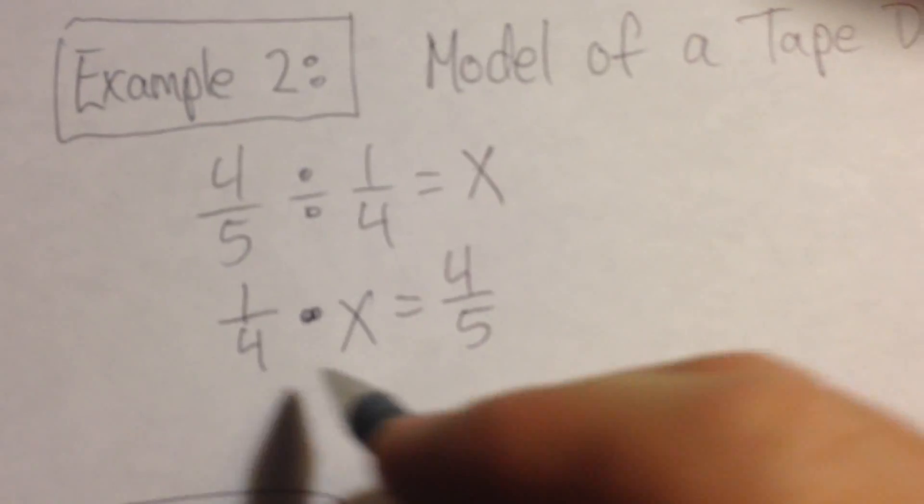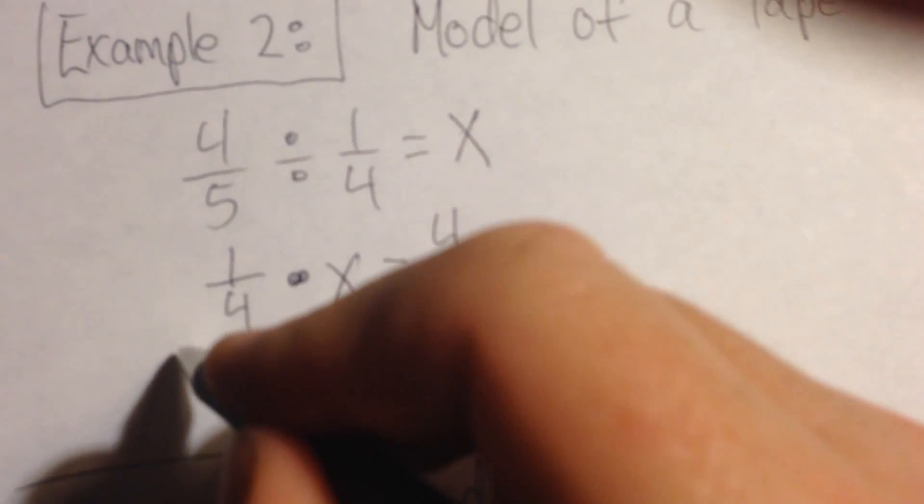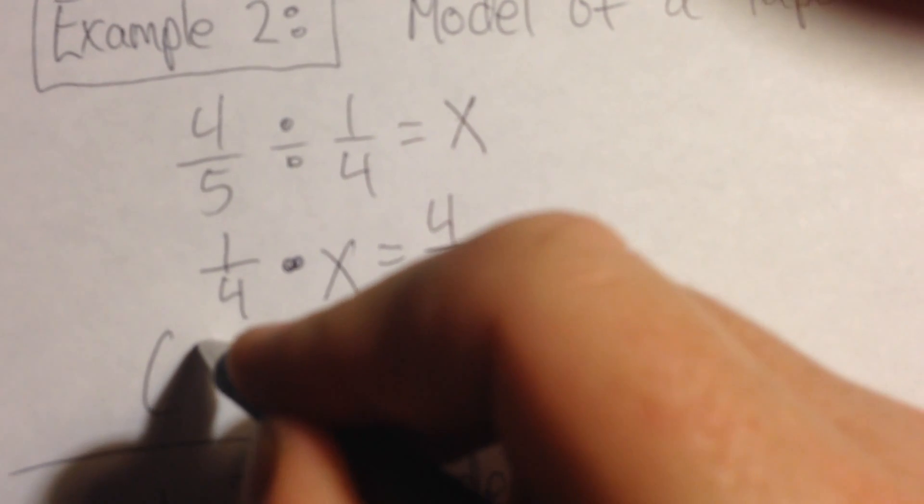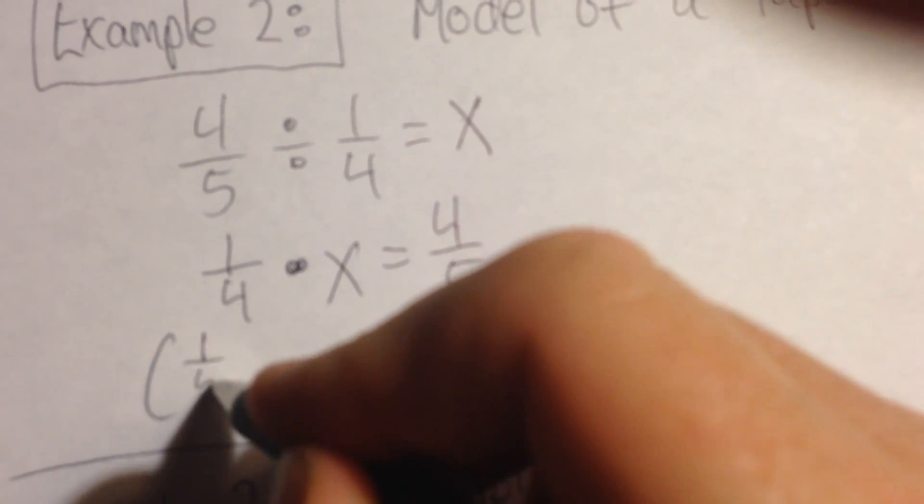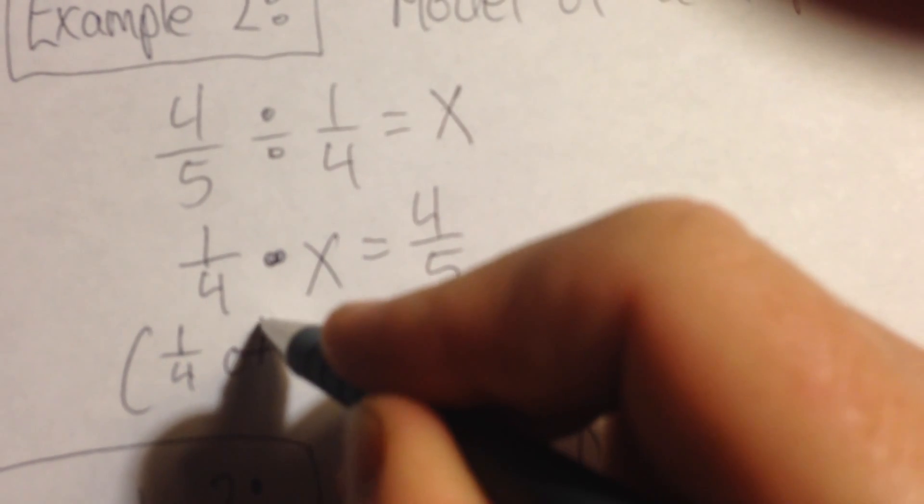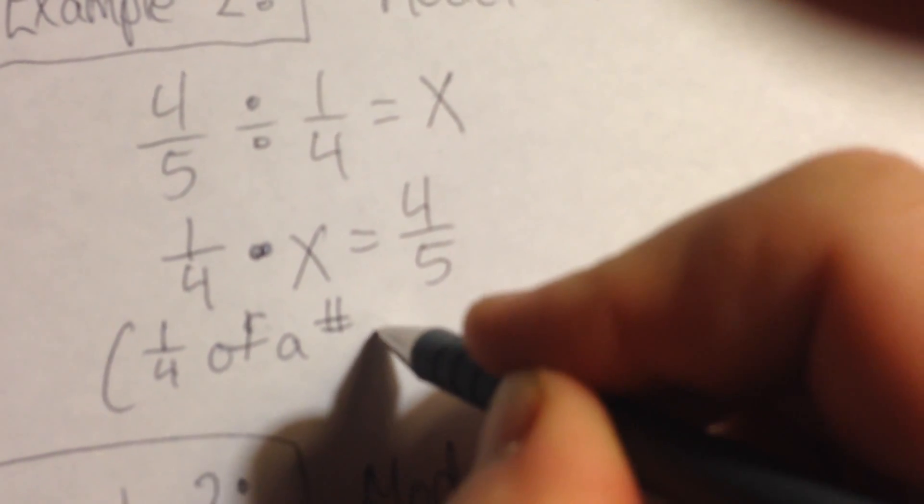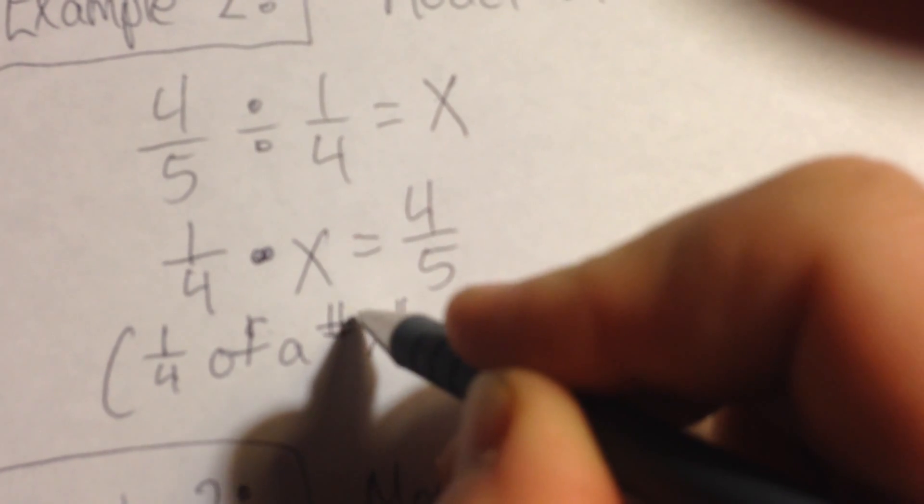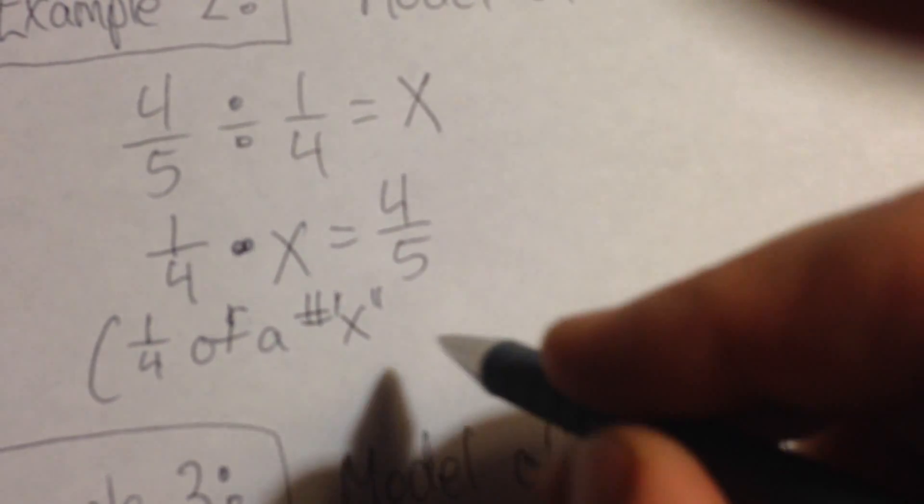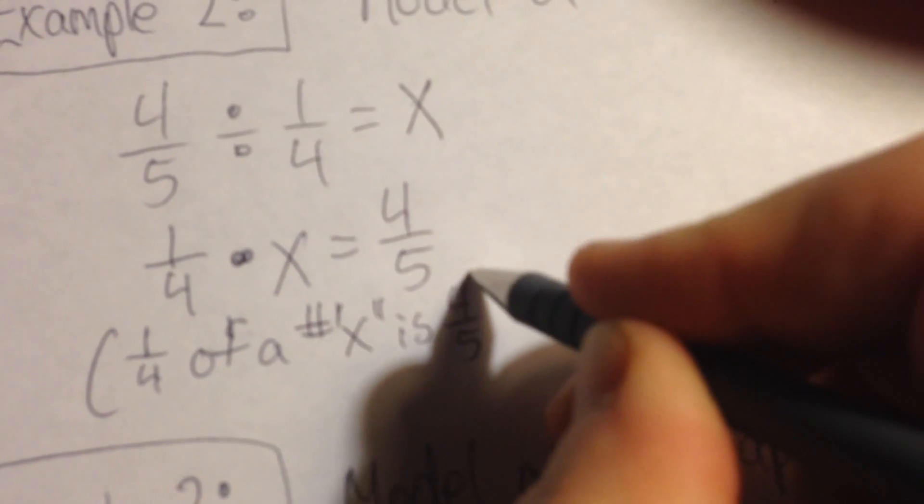This is what we want to make an interpretation of. So when we go to interpret this, what we really need to say, and I like to put this in parentheses right below it, is that one-fourth of a number x is four-fifths.